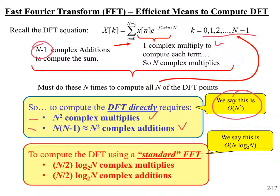The standard FFT algorithm will require on the order of N/2 log₂N complex multiplies and N/2 log₂N complex additions. When we talk about orders of things, you ignore any constant out in front that doesn't change with N. So that one-half factor would be ignored, and we would say this is order N log N. We don't even really have to say log base 2, because we can convert any log base into another with an appropriate constant, so we say order N log N. You might wonder how much of a savings is order N squared versus order N log N.